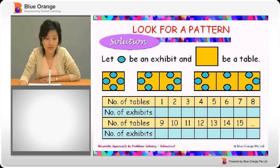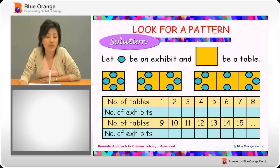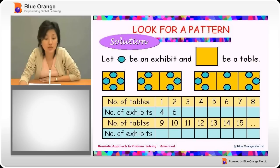Therefore, we can come up with a table that shows the connection. Number of tables: if there's one table we can have four exhibits, two tables we have six exhibits, three tables we have eight exhibits.